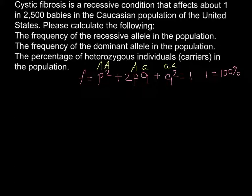So we're told that the recessive condition, or homozygous recessive, occurs in about 1 in 2,500 babies. If we divide 1 by 2,500, we get 0.0004. So we can put it here: 0.0004.